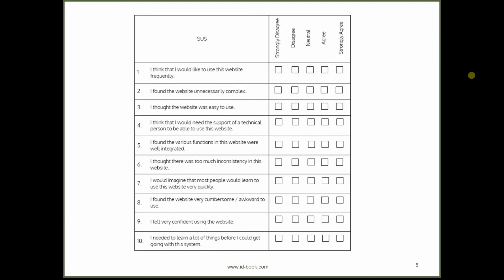So let's look at the system usability scale in a little bit more detail. It consists of 10 questions. And as you can see, every odd numbered question is positively framed.